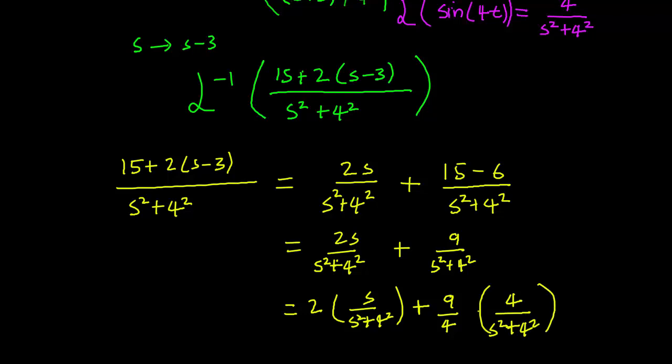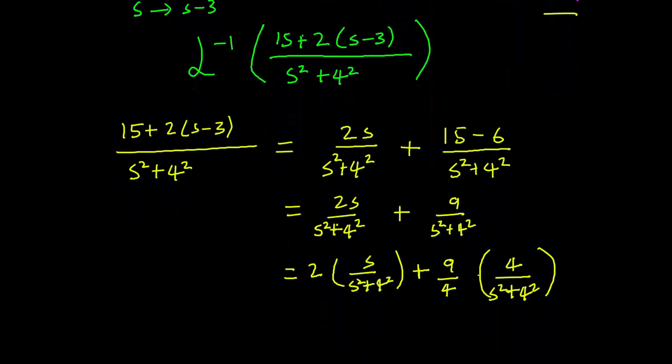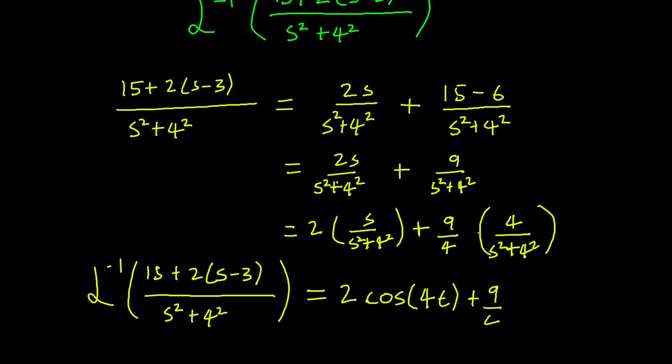And the reason we do this is that we want to make it look like what we have here on the Laplace transform table. So taking the Laplace inverse of this, this is just going to be equal, using our table, to 2 cosine 4t plus 9 over 4 sine 4t.